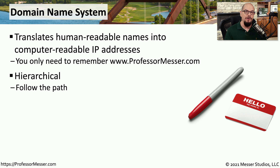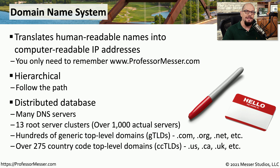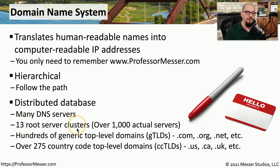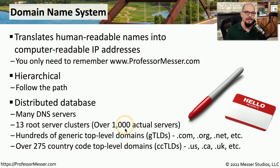DNS is also configured as a hierarchy, which makes it very easy to organize things on the internet, and it is a very distributed database. There are many, many different DNS servers. For example, there are 13 root server clusters, which are the primary root servers for everything on the internet. Although this standard provides for 13 of these servers, there are actually over 1,000 servers providing redundancy across the entire internet.